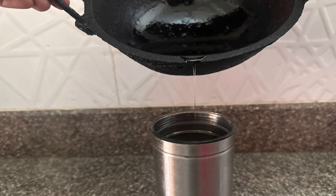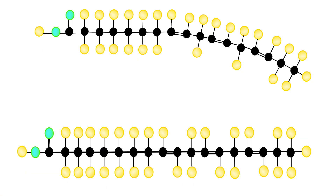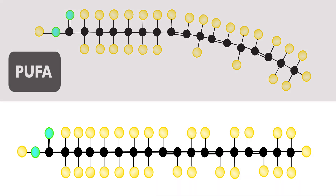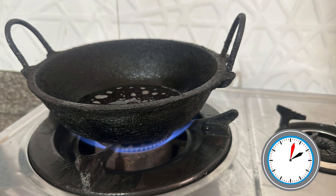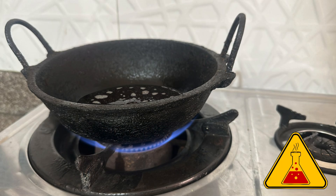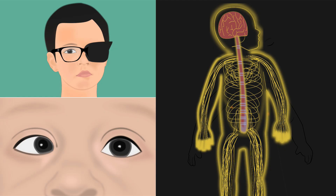Trans fats are also generated when PUFA-rich oils are reused. Once the oil is exposed to frying temperature, they start to break down. Heating them over and over again changes their structure from cis to trans, converting the PUFA to trans fatty acids. Heating them for a longer time releases toxic aldehydes. Intake of these fats increases the risk of heart diseases, obesity and diabetes. Disorders of vision and nervous system are seen in children.